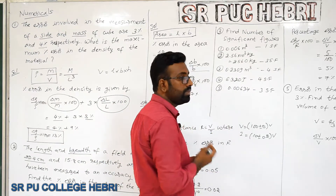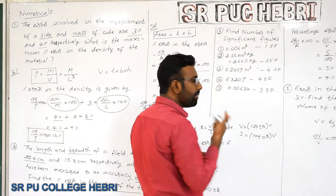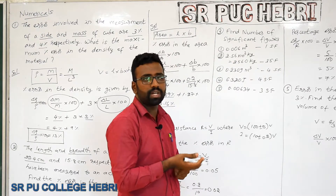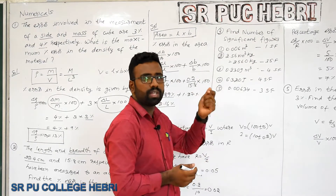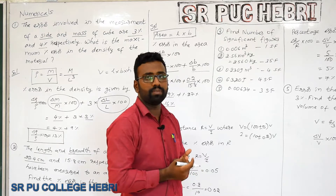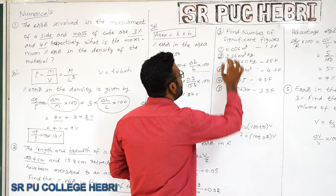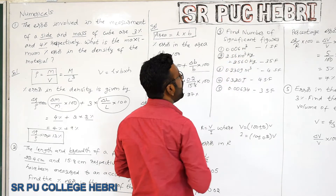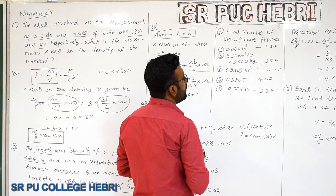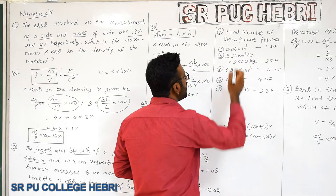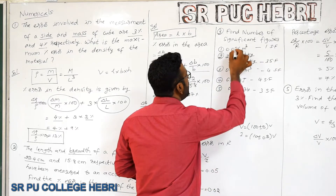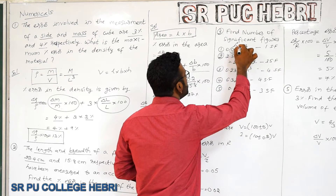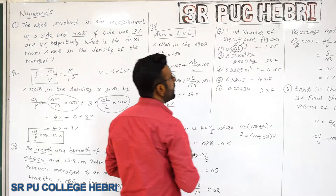Now we will solve some significant figures problems. You have already studied this in chemistry, so remember the rules thoroughly before attempting the numericals. For the first example: 0.006 m³ — totally three digits are present, but the two leading zeros are not counted. So there is only one significant figure.